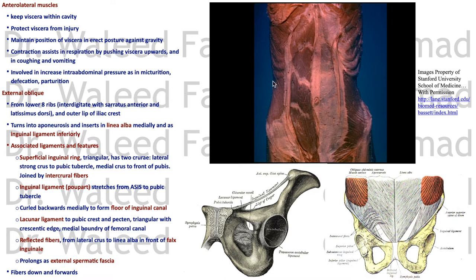The first sheet is the external oblique — a big muscle that takes origin from the lower eight ribs, interdigitating with the latissimus dorsi and serratus anterior. It also takes from the outer lip of the iliac crest — the upper margin of the hip bone with its three lips — and from the thoracolumbar fascia posteriorly. The direction of the fibers is downwards and forwards, as if putting your hand in your front pockets.